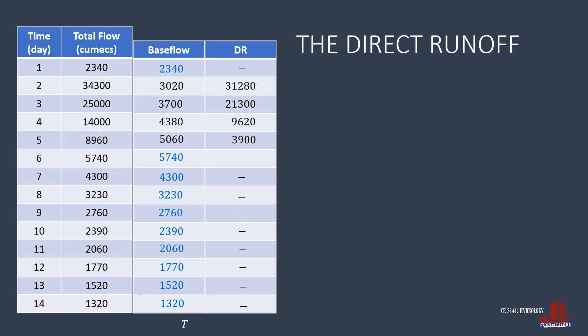Taking the summation of DR, we have 66,100 cumecs, where the volume of direct runoff is multiplied by the time converted into 24 hours. After which, attach the conversion factor of 3600 seconds per hour. Then, at this point, seconds and hours cancel out, giving the volume of direct runoff of 5.711 megacubic meters.